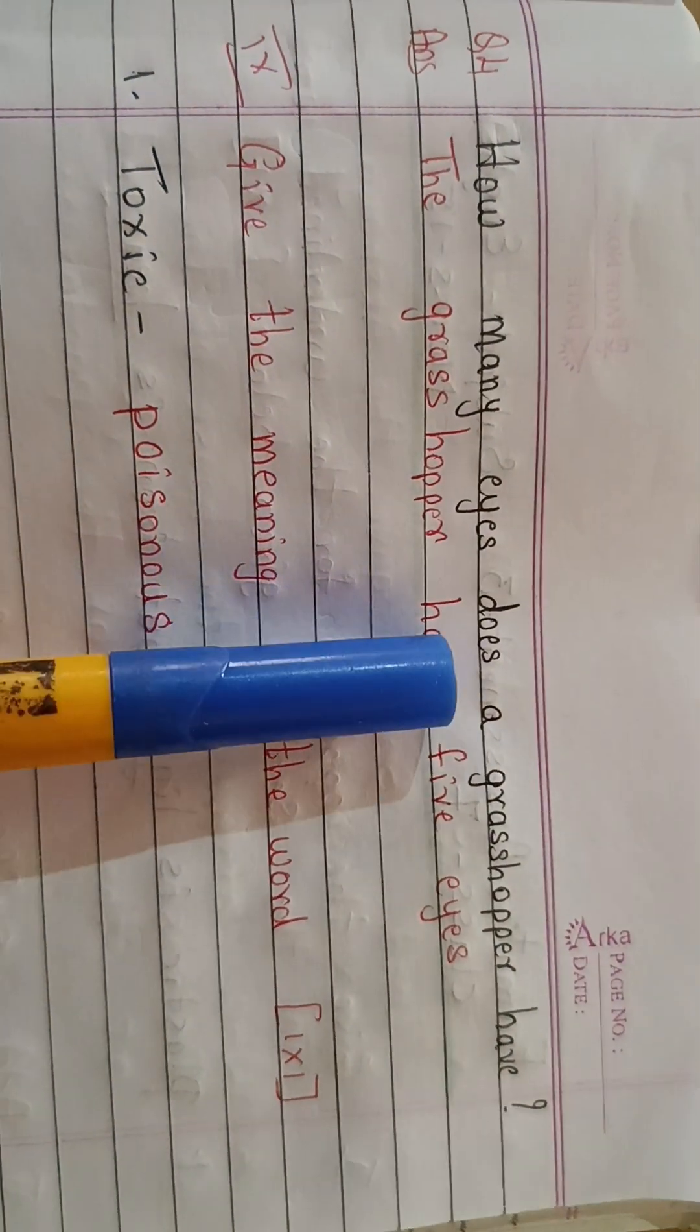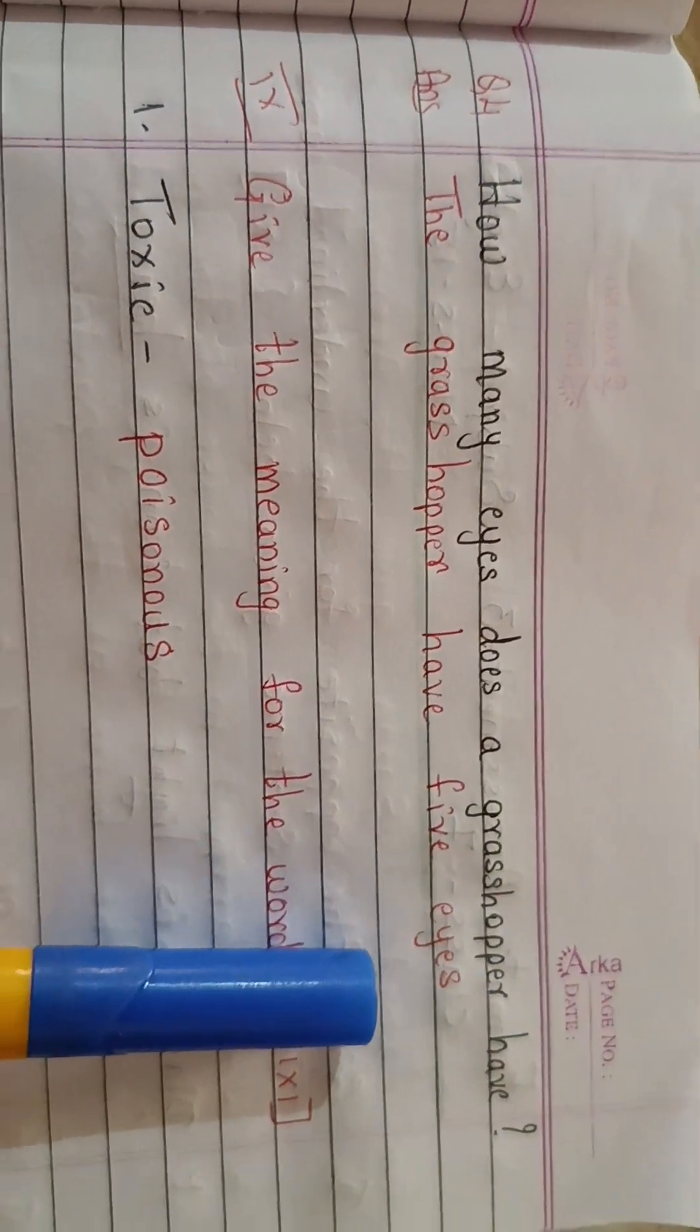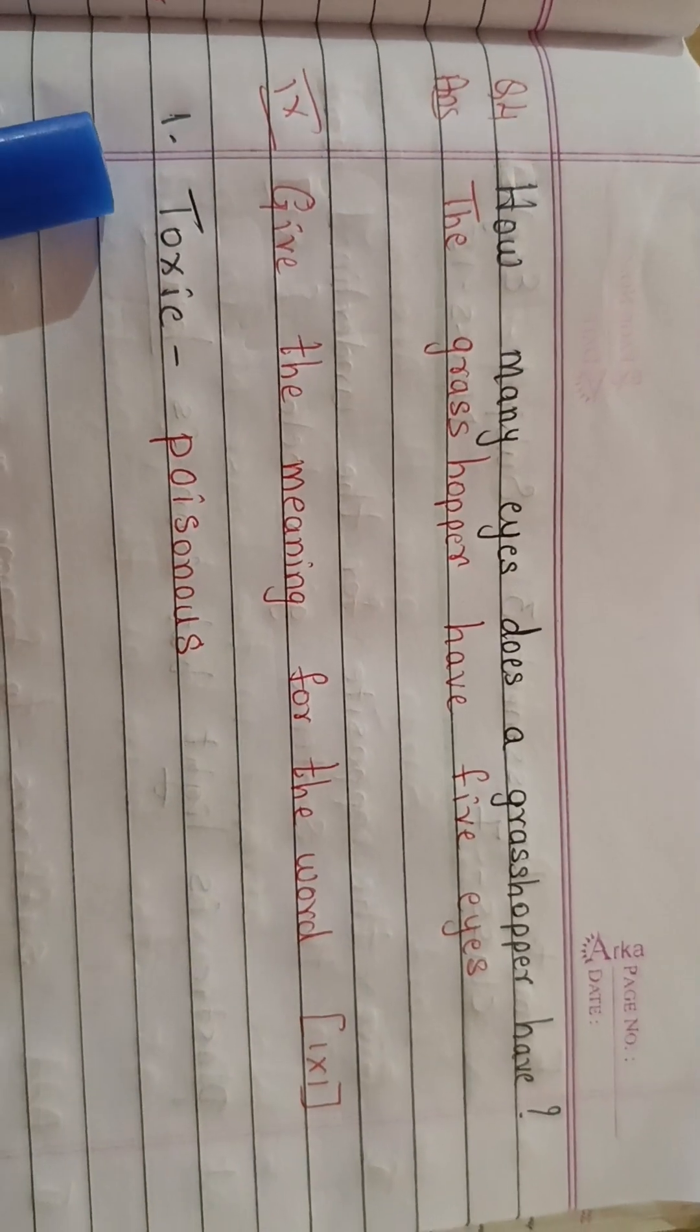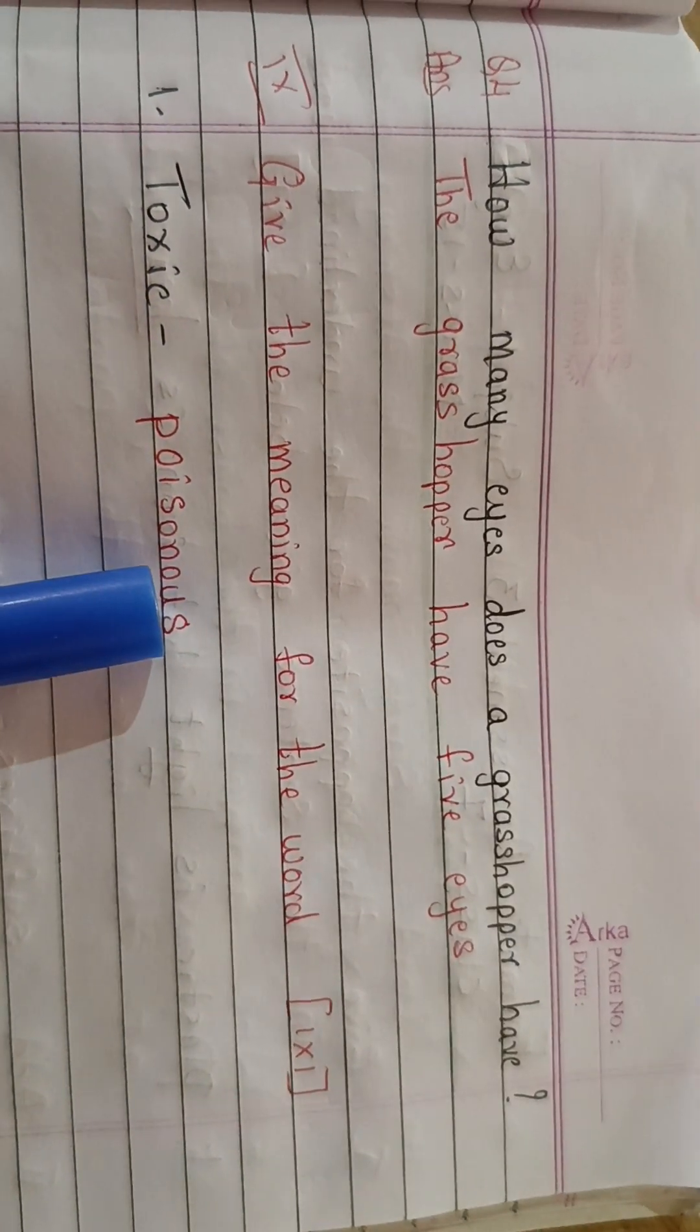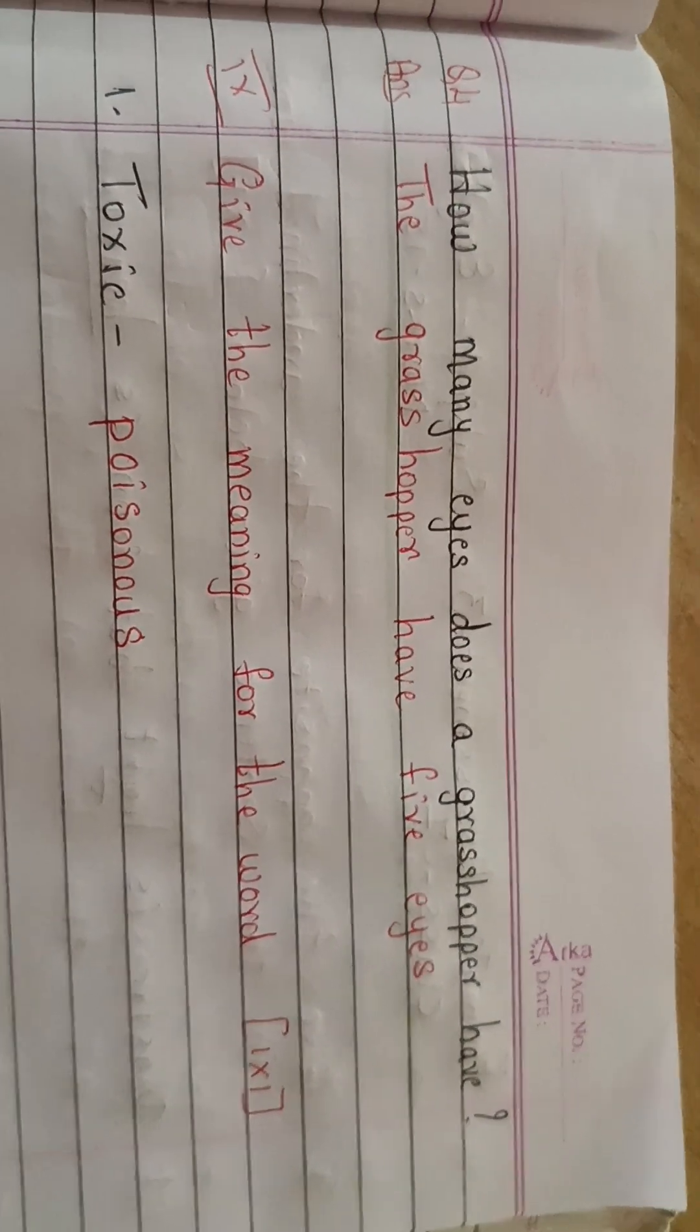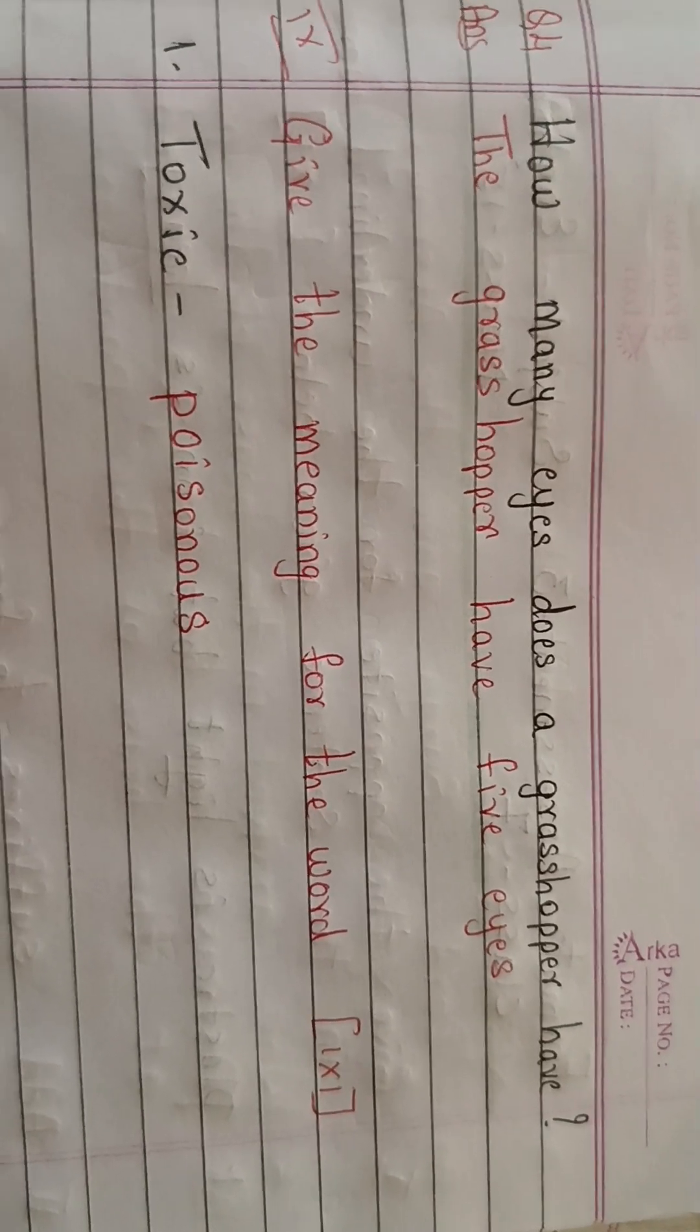How many eyes does the grasshopper have? The grasshopper have five eyes. Give the meaning for the words toxic. Toxic, so the meaning of toxic is poisonous. So these are the questions which carries fifteen marks for FA3.